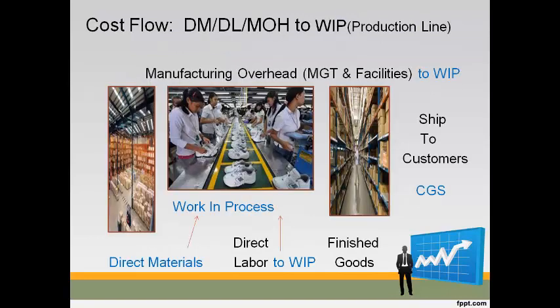Here is a visual picture of the flow of product costs into inventory. Direct materials are stored in the direct materials warehouse until moved to the production line. On the production line, direct labor works with direct materials to make products, and their combined costs become work in process. Manufacturing overhead — the cost of facilities and management — is also added to work in process. When products are complete, all costs move to finished goods inventory, stored until shipped to customers. The cost of goods sold is reported on the income statement only when the goods are sold.